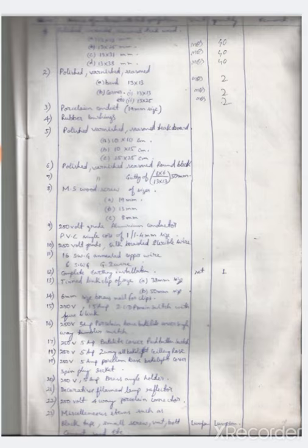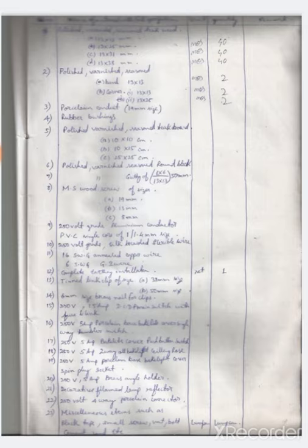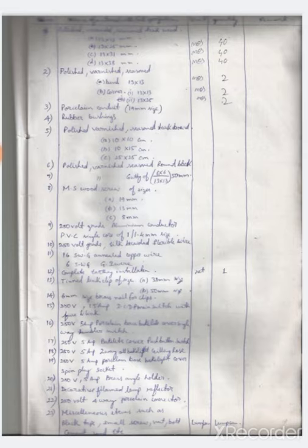MS wood screws of 19 mm, 13 mm, and 88 mm. Other things required are a complete set of 6 mm size brass and nail clips, 250 volt 15 ampere main switch with fuse and link. We will also require brass angle holder 250 volt 5 ampere, 250 volt 4-way porcelain connector, and miscellaneous items such as insulation tape, small screws, nuts and bolts. This was the total list of material for the estimation of electrical wiring in the CTS system of wiring. Thank you students for watching.